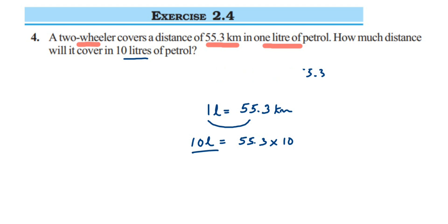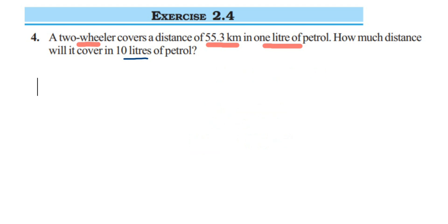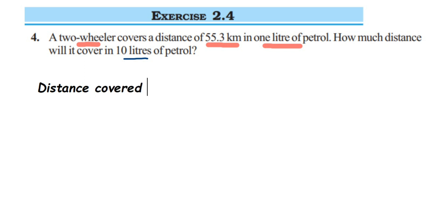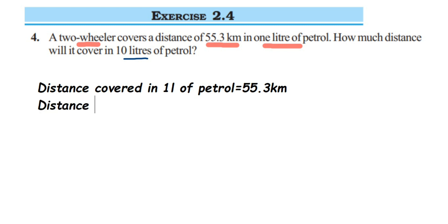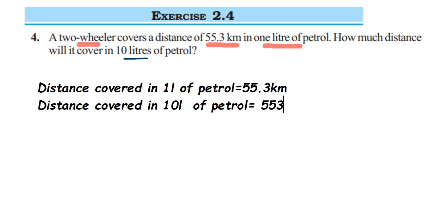Let's write down what we know from the question. Distance covered in one liter of petrol = 55.3 kilometers. Therefore, distance covered in 10 liters of petrol will be equal to 55.3 multiplied by 10.